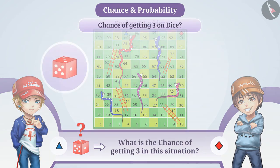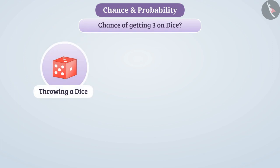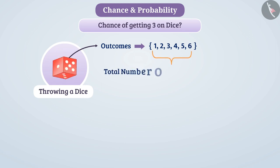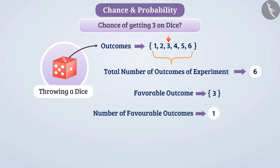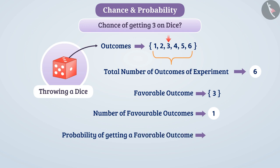Throwing the dice is an experiment which can have outcomes 1, 2, 3, 4, 5, or 6. We say that in the experiment of throwing a dice, the total number of outcomes is 6. Since we are required to get 3, the number of favorable outcomes is 1. In this way, the probability of getting a favorable outcome is 1 out of all 6, i.e., 1 by 6.